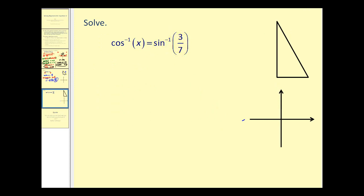Okay, here's another. Now remember inverse sine 3/7 represents some angle θ that has a sine ratio of 3/7. Let's go ahead and model that angle over here in this right triangle.